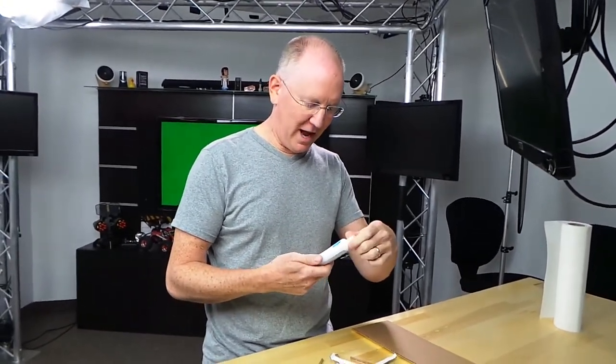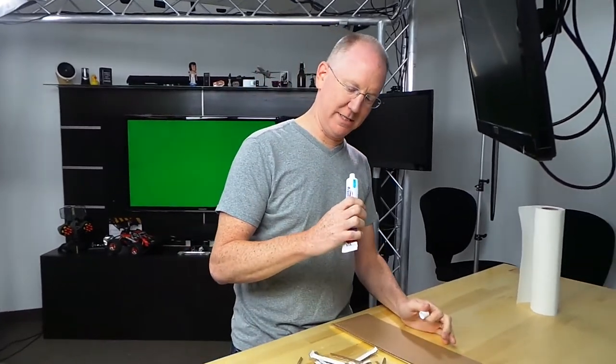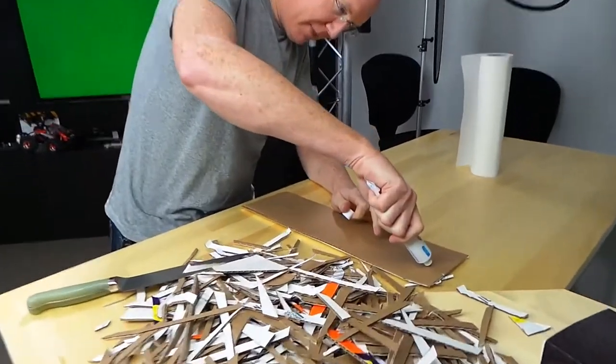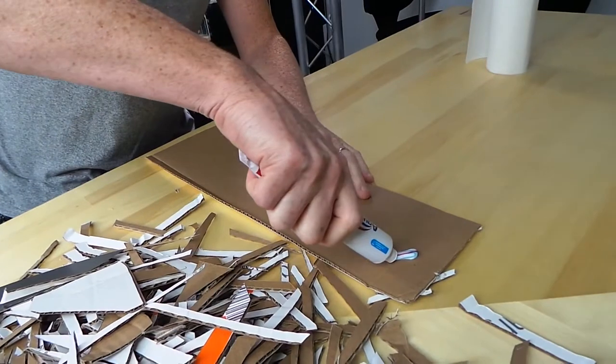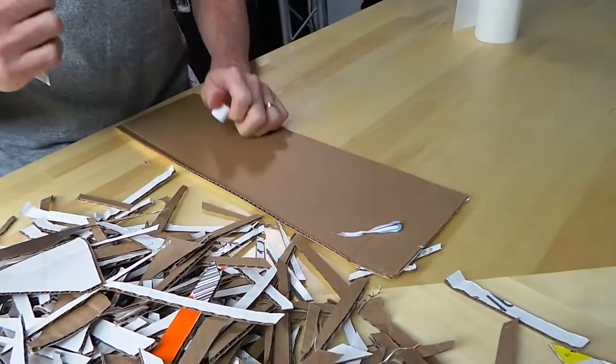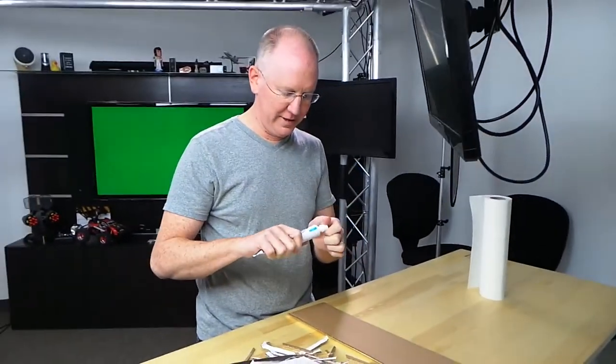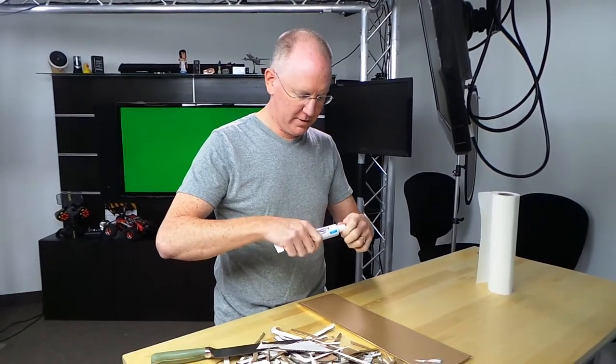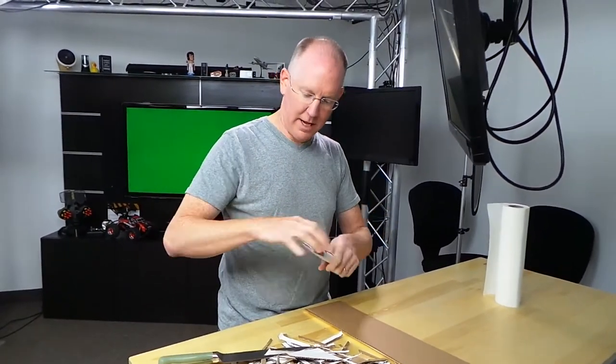I've always wondered, like this is Aquafresh. You know when you squeeze this stuff out, we don't need to watch you brush your teeth. When you squeeze it out you see how it comes out and it's got like different colors and stuff. Why, how do they do that? I've always wanted to know. So I'm going to do this.